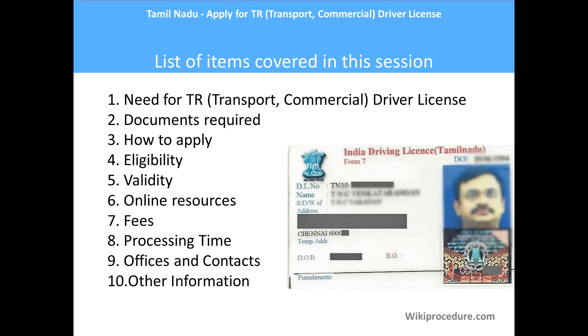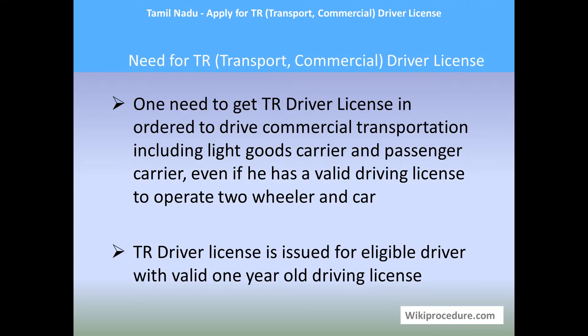One needs to get a TR driver license in order to drive a vehicle meant for commercial transportation — taking goods as well as passengers from one place to another as prescribed in the permit. Even if you have a valid driving license for a two-wheeler or a car, you must specially apply for this TR driver license to drive these vehicles. If you possess an ordinary driving license for a car, you cannot drive a car meant for tourist or commercial travel.